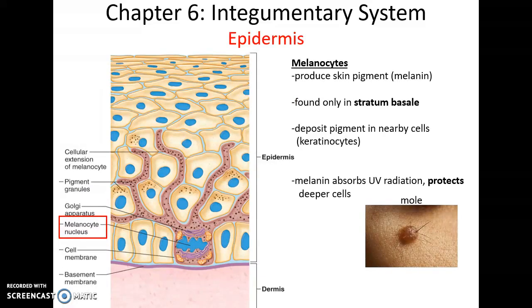Melanocytes are another kind of cell found in the epidermis. The melanocytes live in the stratum basale and have extensions that push up into the stratum spinosum, where they deposit the pigment melanin into the keratinocytes. Melanocytes produce this pigment, which is then deposited into the keratinocytes, and the pigment will absorb UV radiation to help protect cells and their nuclei from that radiation. Occasionally a melanocyte will become stimulated to overgrow, and when that happens you will form what's called a mole.